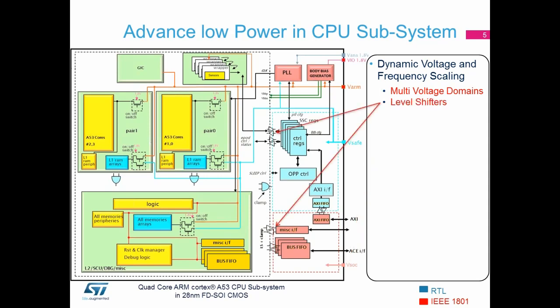When you have two voltage domains, any signal crossing between them requires a level shifter to scale the voltage up or down as needed. We can see through the arrows that these level shifters are present at the boundary of the voltage domains. Since they are shown in red, they are part of the IEEE 1801 format definition.